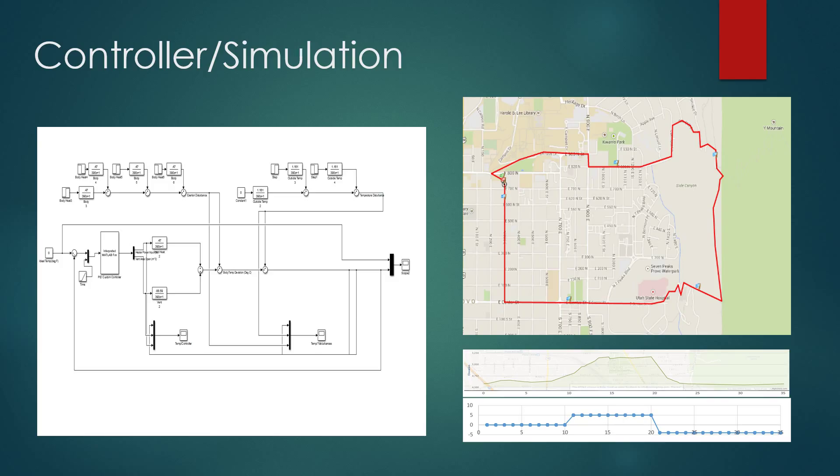And so with a little help from Dr. Hedengren and with a lot of work from ourselves, we were able to come up with a custom S-block function that would allow us to, it was logic-based, that would allow us to send different signals at different times to the coils versus the vents, depending on whether the body was overheating or cooling off too quickly.